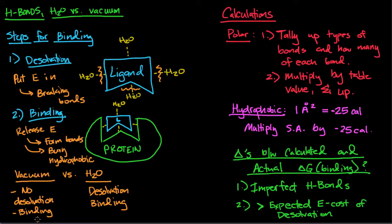Now calculations. For the polar interactions what you want to do is tally up the types of bonds and how many of each of those bonds. Calculate how many charged ion dipole interactions you have or how many dipole-dipole interactions you have, tally those up, and then you're going to multiply it by the table value and sum those up. That'll be your delta G due to polar interactions. Make sure you're using the right delta G values based upon in a vacuum or in H2O.